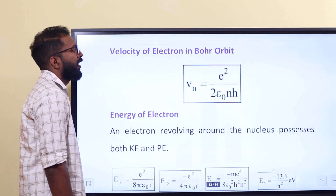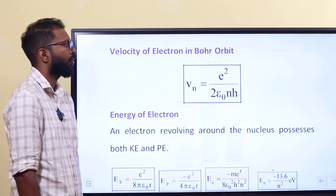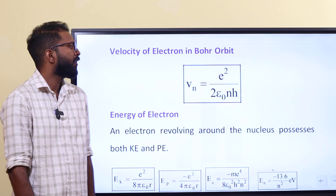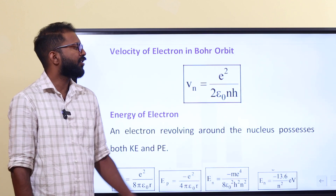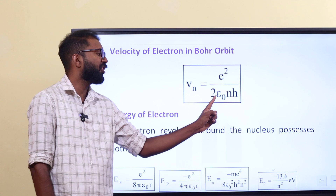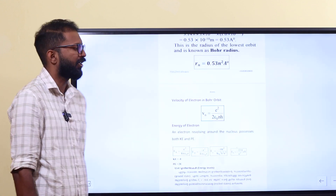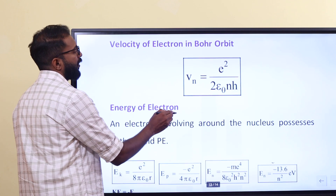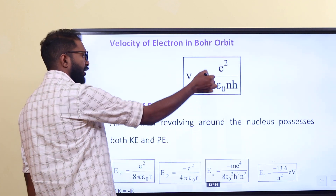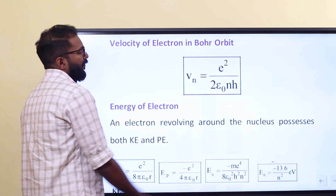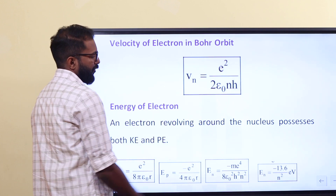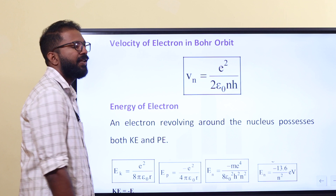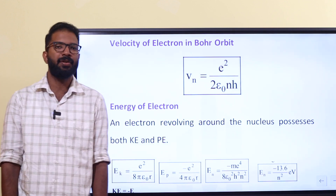That's the velocity of the electron in the Bohr orbit — the Bohr orbital velocity equation. Now, vn is equal to e² divided by 2 epsilon 0 n h. That is the velocity of the electron in the Bohr orbital. For the first orbit, v1; second orbit, v2; third orbit, v3.